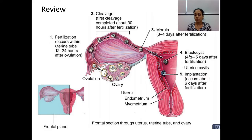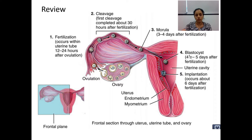A quick review on the first week of embryonic development. Ovulation occurs and the oocyte is expelled from the ovary, then picked up by the fimbria of the uterine tube. Fertilization occurs within the uterine tube, especially at the ampulla, 12 to 24 hours after ovulation. The product of fertilization is called a zygote, which slowly undergoes mitotic division.